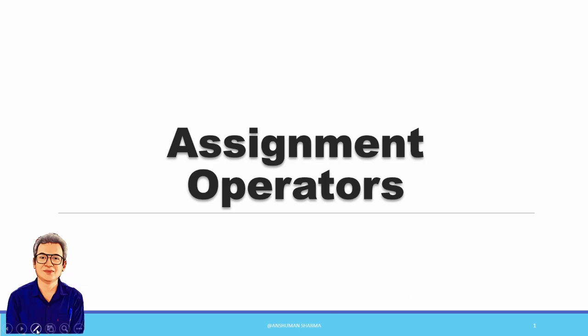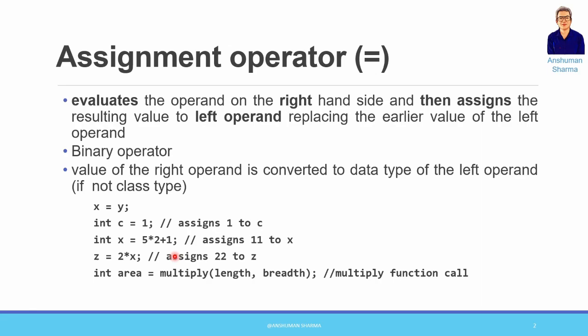Hello everyone, today we'll be discussing the topic of assignment operators. We have assignment operators in C++, also in C, and in most programming languages that you will be learning throughout your career. The assignment operator is simply specified by the equal-to sign, and it assigns the value of the right operand to the left operand.